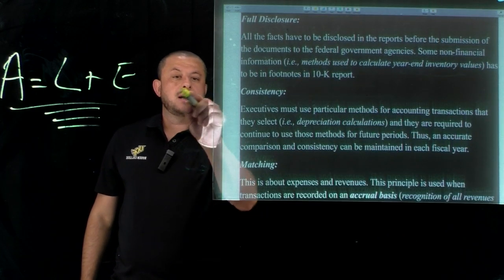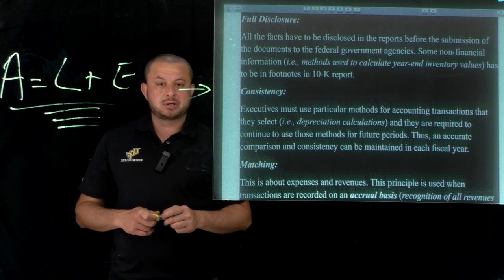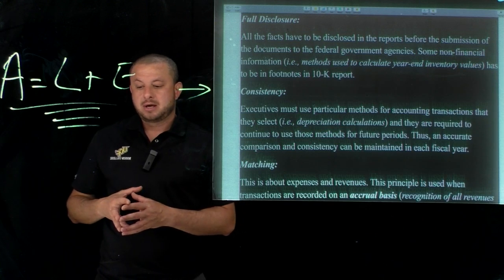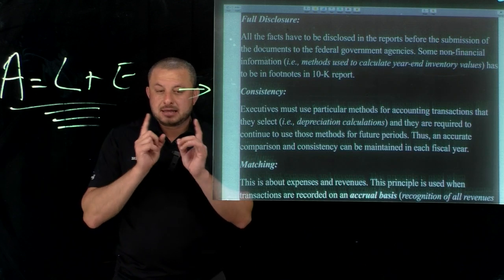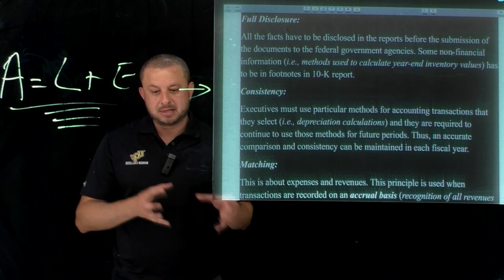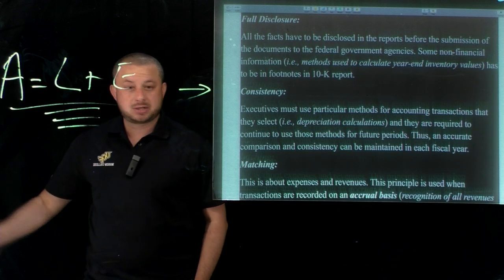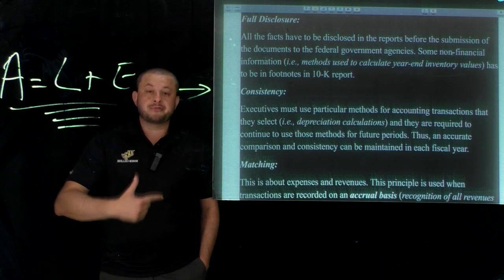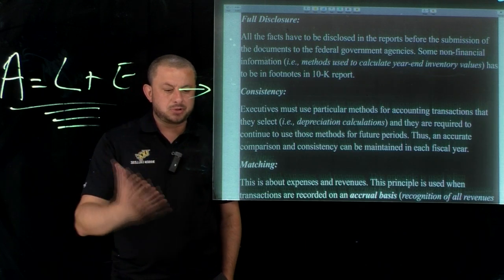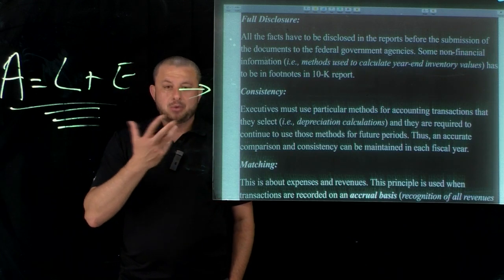Consistency is important. Companies must be consistent in their accounting procedures. For example, if a hospitality company starts with a specific depreciation calculation, that company must follow that same calculation forever — unless it notifies the government of a change. Different depreciation procedures have different tax and profit implications. Whatever procedure you're using, you cannot change it mid-year; you must finish the full fiscal year with that procedure.